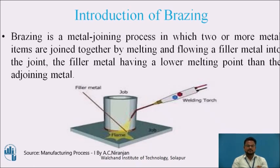In this diagram you can see Job 1 and Job 2. To join these two metals, we require flux and a high temperature flame from the welding torch. Filler metal is applied between the two base metals, and the high temperature flame is applied to melt the flux, causing the joint to take place between the two jobs.